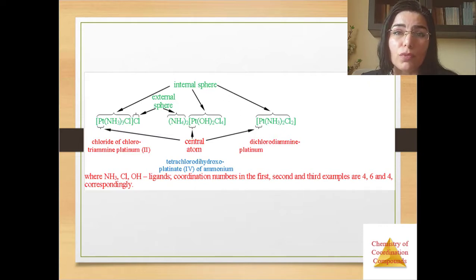For instance, you see here ammonia, chlorine, OH ligands and coordination numbers in the first, second and third examples are 4, 6 and 4 correspondingly. You see here structure of complex compounds. For example, chloride of chlorotriammineplatinum, here is chlorine external sphere situated. Then internal sphere, platinum, ammonia-3 and chlorine, and central atom is platinum, and so on.